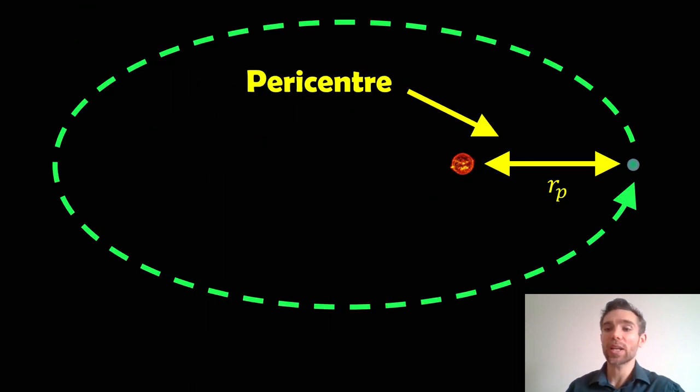So before we do that, let's just quickly revisit an elliptical orbit and note what the pericentre is. The pericentre is the shortest distance between the two objects. The example here is we've got a star and a planet, and the planet appears to be orbiting around the star.